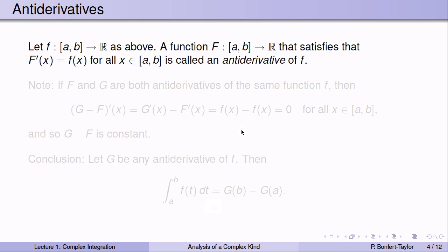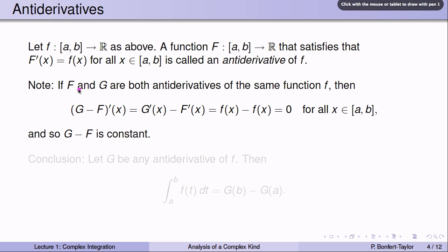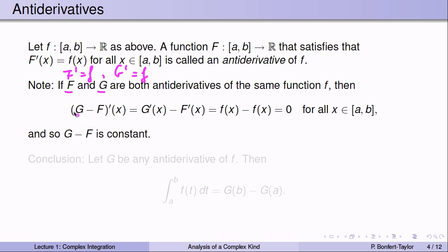F gives an antiderivative of f — a function whose derivative is f. Any function satisfying that is called an antiderivative of f. If you find two different antiderivatives F and G, both satisfying F' = f and G' = f, then (G - F)' = G' - F' = 0, making G - F a constant function. So two different antiderivatives of the same function can only differ by a constant.